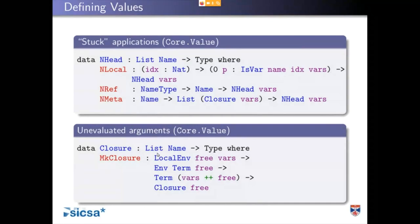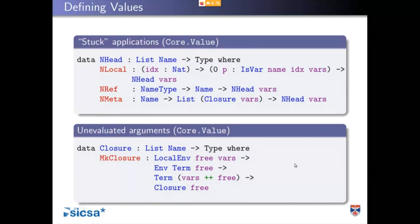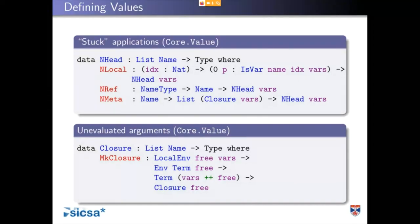The other thing we need to deal with is closures — unevaluated terms. We started with a term, and during evaluation we've paused and said we'll get to this later if we need to. If we need to evaluate it later, we have to record what the status of the local environment was at the point where we stopped evaluating, so that we can resume. It's a thunk basically.